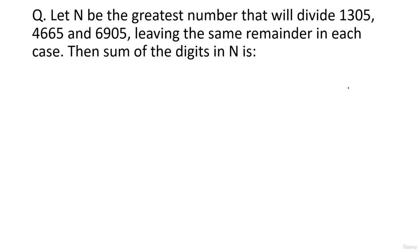So let N be the greatest number that will divide 1305, 4665 and 6905, leaving the same remainder in each case. Now let's observe something. If I write multiples of 30, let's say I write 60 and I write 90 and let's say I write 150, a multiple of 30. If you observe carefully, this is 30 into 2, this is 30 into 3, this is 30 into 5.